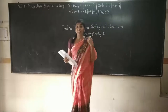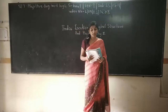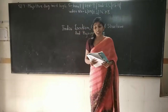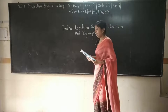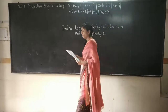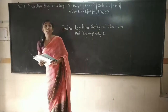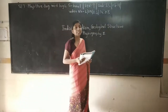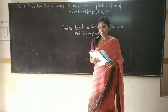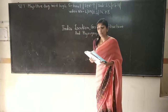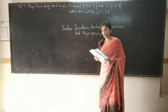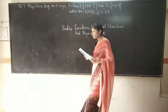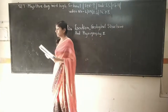The first type is alluvial soil. It can be divided into khadar and bhangar. The old alluvial deposit is known as bhangar soil. This soil is formed due to river flows and is found mostly near rivers.